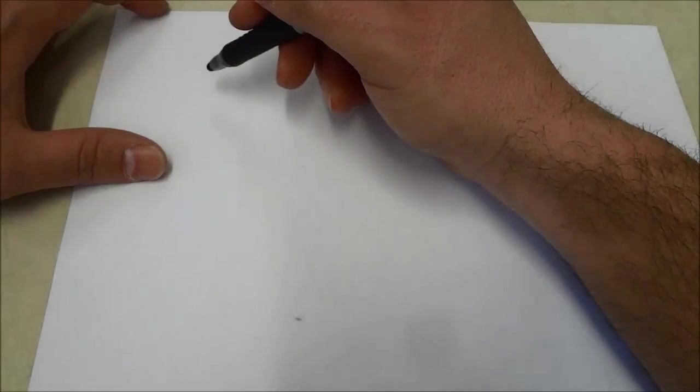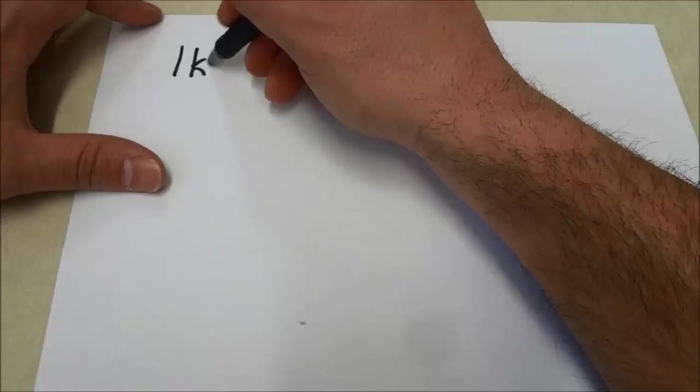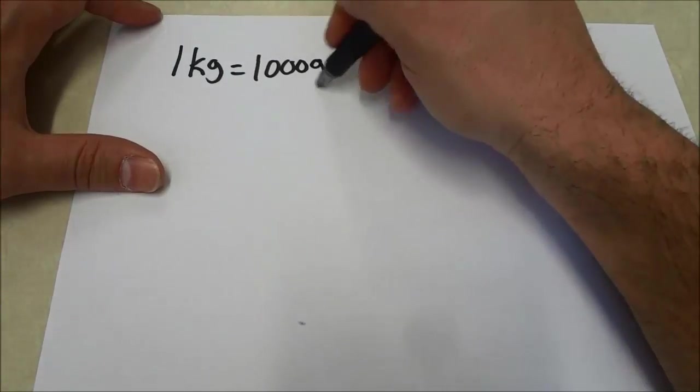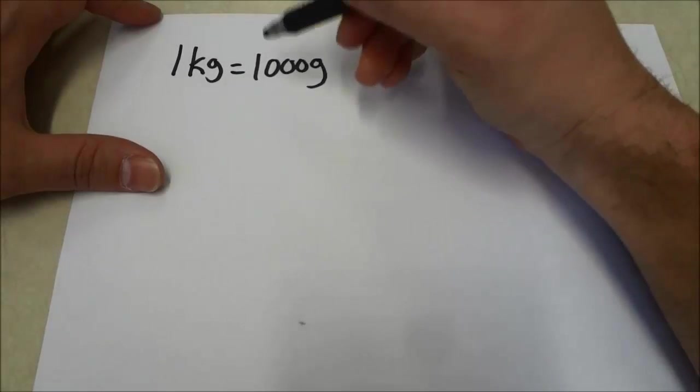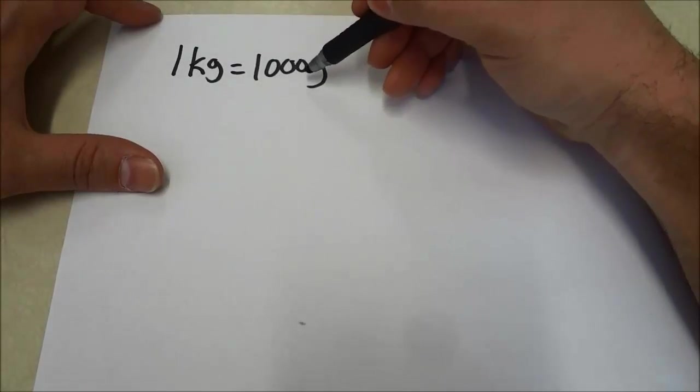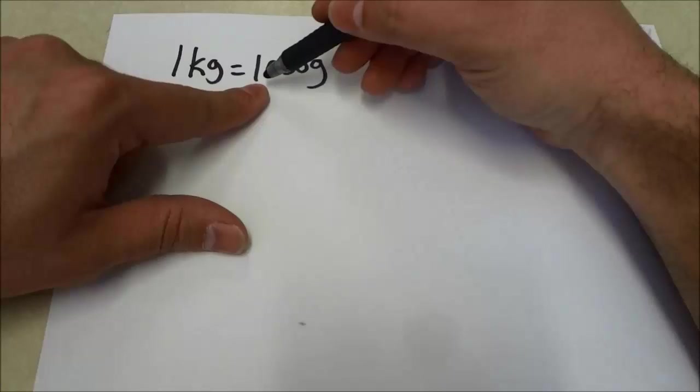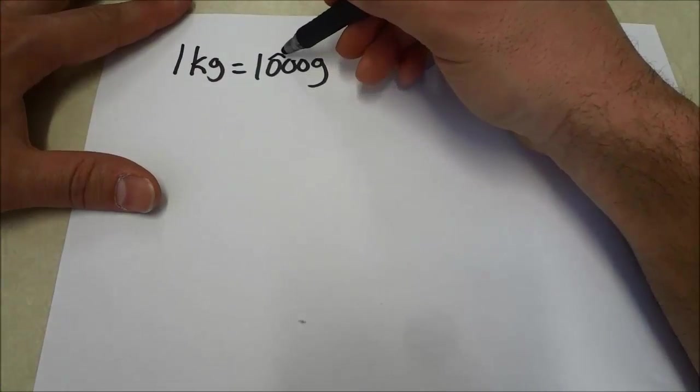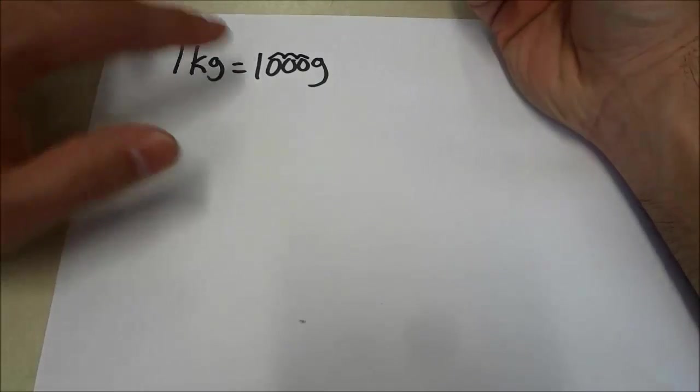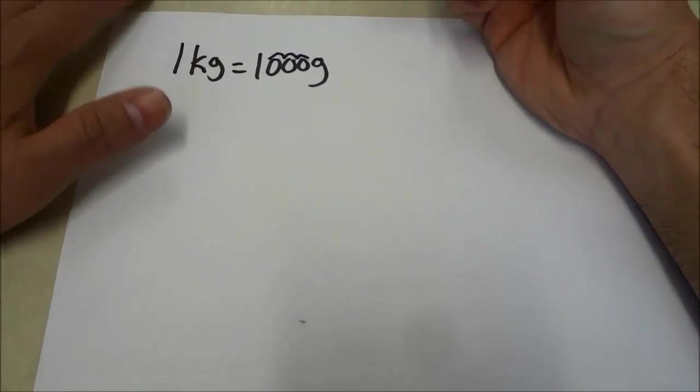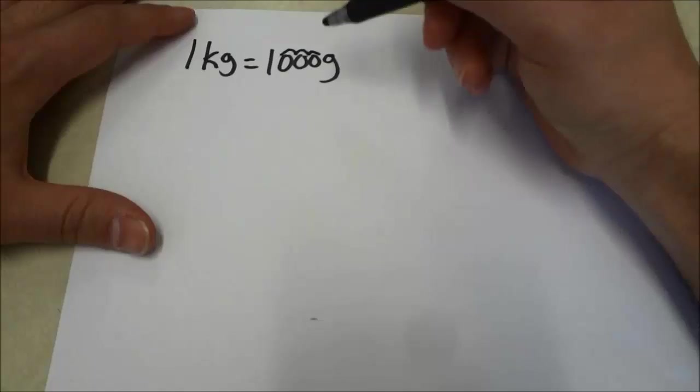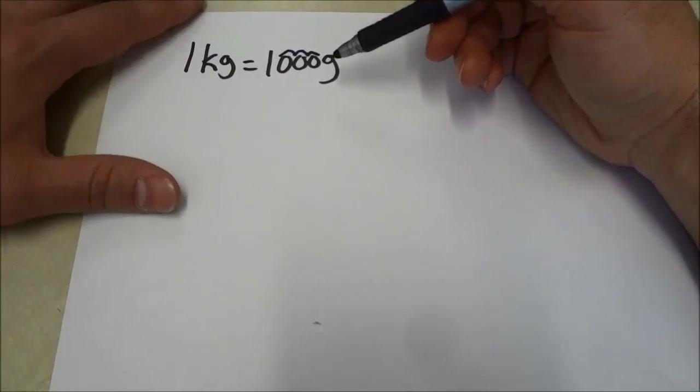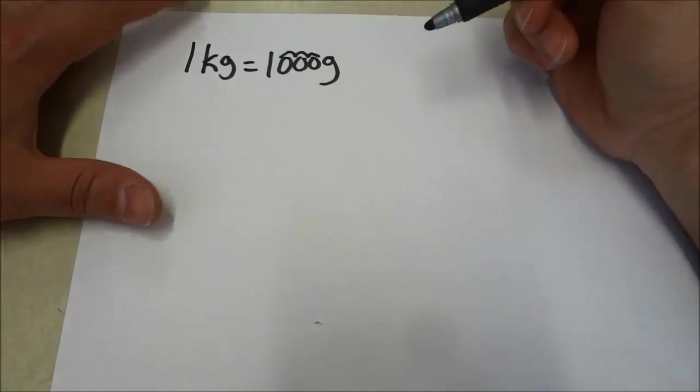The first thing that you need to know is that one kilogram is equal to 1,000 grams. Now it's very important to take note of the number of zeros that are in the number 1,000. So there are one, two, three zeros just as you can see right there. And basically all that you need to know is that because there are three zeros, we will be moving the decimal place three times to the right.